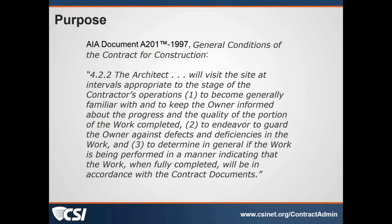The first slide talks about the purpose for construction observation reports. We've talked in the past about doing site visits and site reports, and today we're going to delve a little bit more into the actual report itself. As a reminder, AIA Contract Documents General Conditions B201 states that the architect is to visit the site at intervals appropriate to the stage of the contractor's operations, to become generally familiar with and to keep the owner informed about the progress and quality of the portions of the work completed, and to endeavor to guard the owner against defects and deficiencies in the work.